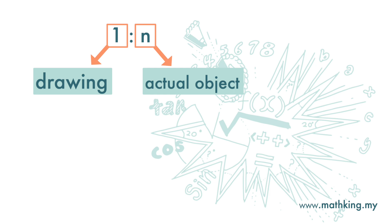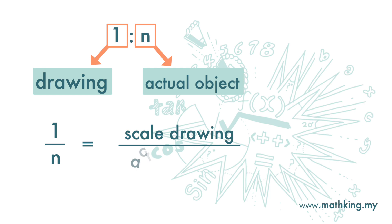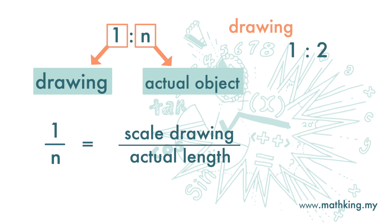We can also write the scale this way as 1 over n. The 1 on top means 1 unit of the drawing and the n at the bottom is the actual length. For example, if the scale is 1 to 2, this means 1 unit in the drawing represents 2 units of the actual object. If the scale is 1 to 1000, that means 1 unit in the drawing represents 1000 units of the object in the actual world. This scale is common for maps.